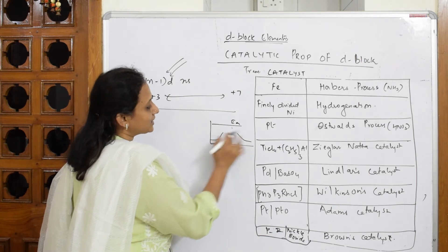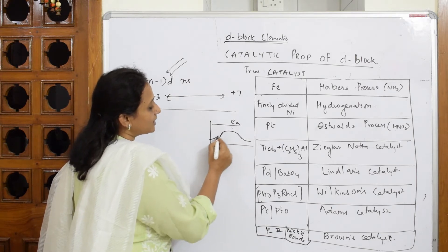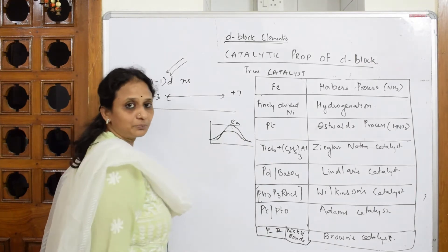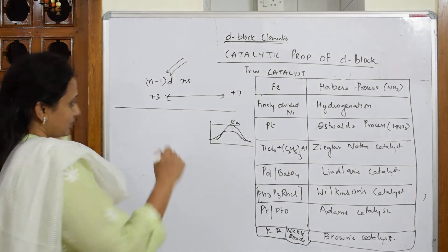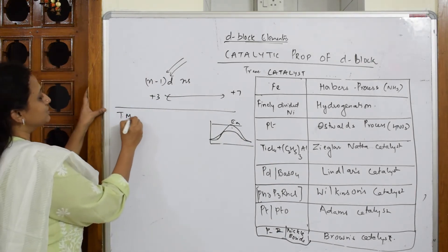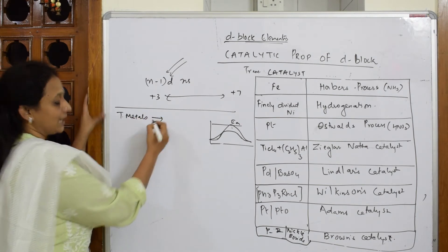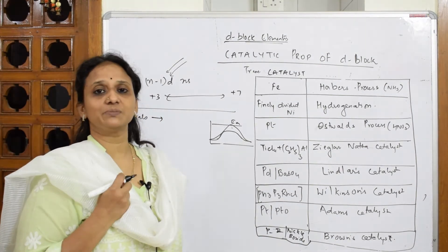Without catalyst, suppose if I take a catalyst, it's going to take such long barrier and then form the products. So, first, most important thing is your transition metal elements have very active sites on the surface of these metals.